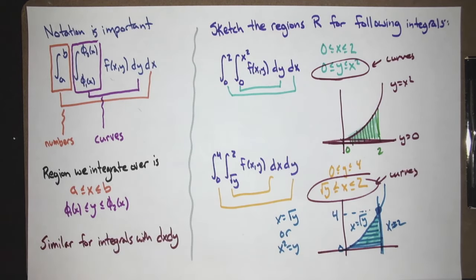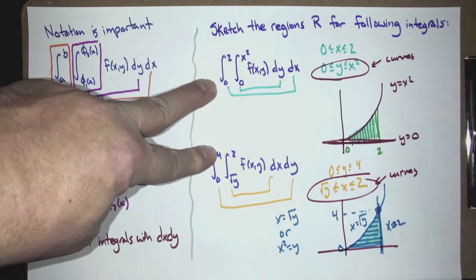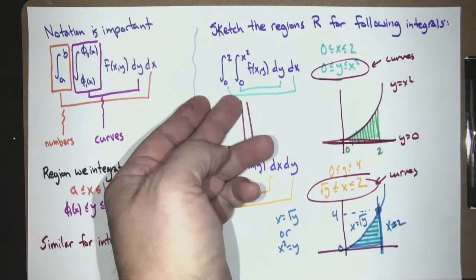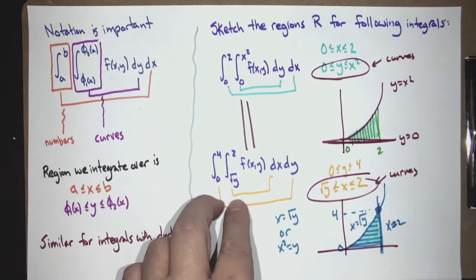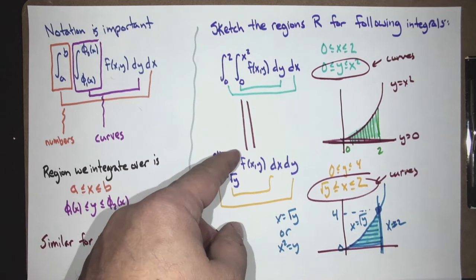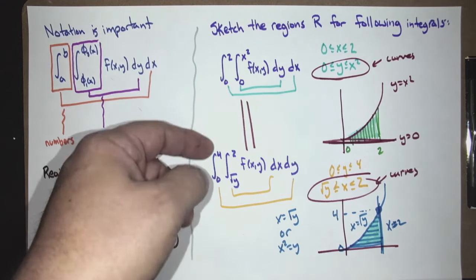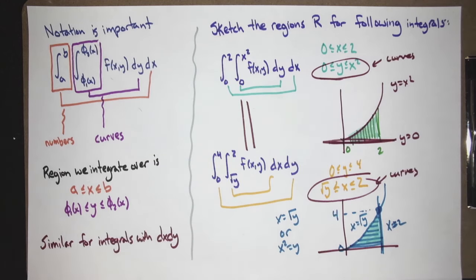Do you notice anything about these two regions? They're the same. So what can we say about these two integrals? They're the same integral — they're just expressing the integration in a different order. It's not like rectangles where you just flip and life is good. When you flip, the bounds change in a more subtle way: the outer layer must always be numbers, and the inner layer must be curves. You can't have a function on the outside layer. So changing the order of integration is a little more subtle.